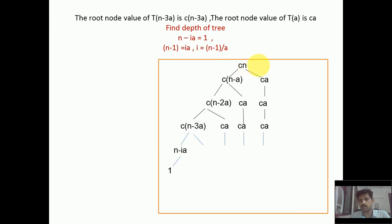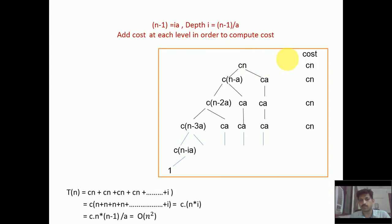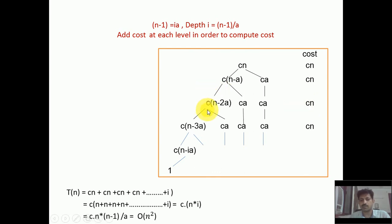Next, we compute the cost at each level. At level 0 (or level 1), the cost is c·n. At level 2, summing c(n-a) + c·a gives c·n again. At level 3, the terms c(n-2a) + c·a + c·a cancel to give c·n. So at each level the cost is c·n, where c is a constant greater than 0.